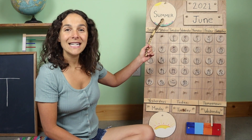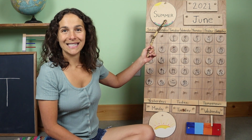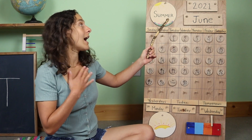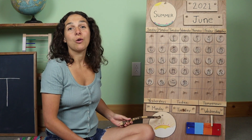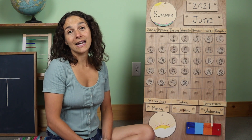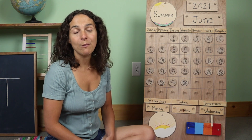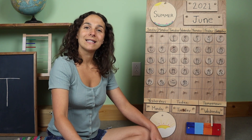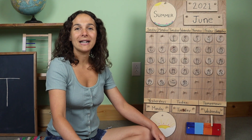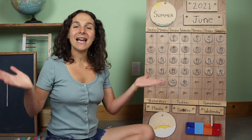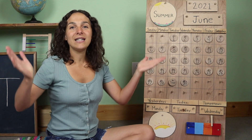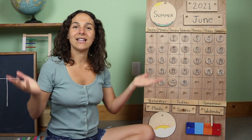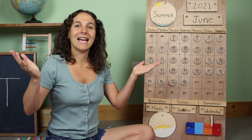Right up here, we have the season. Do you know what the season is? Summer! It's summertime where I live. And back down at the bottom of the chart, we have a picture of the weather. So let's sing the weather song together, and then we can share what we see outside of the window. What's the weather? What's the weather? Can you tell? Can you tell? Is the sun shining? Is the rain falling? Can you tell? Can you tell?